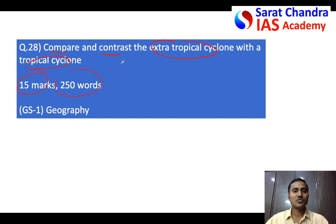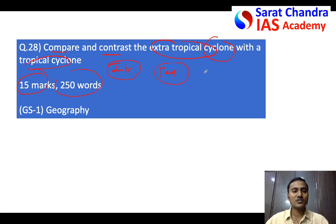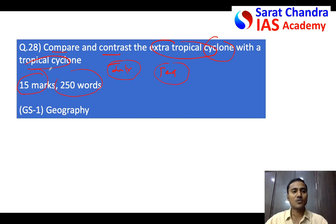For 15 marks, around 250 words. In this kind of question, in the introduction it is better if you define what a cyclone is. Also, as it is a geography question, try to draw a diagram. You don't need to explain the diagram, because they didn't ask you to explain tropical or temperate cyclones — they only asked you to compare.